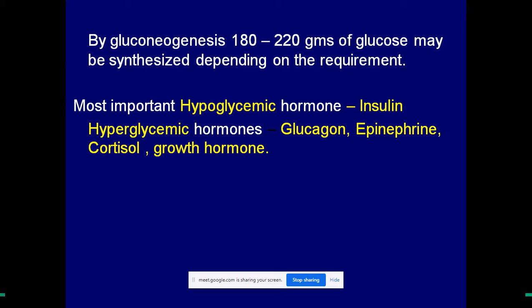The hypoglycemic hormone in our body is insulin. The hyperglycemic hormones are glucagon, epinephrine, cortisol, growth hormone, and ACTH. Hypoglycemic hormone means it decreases the blood glucose concentration, so insulin is a hypoglycemic hormone.